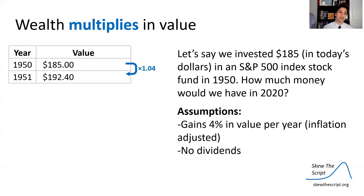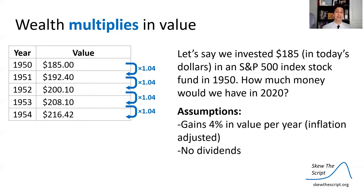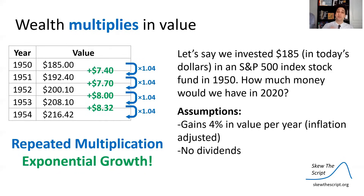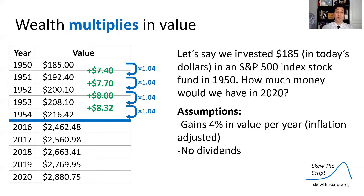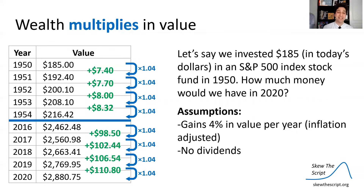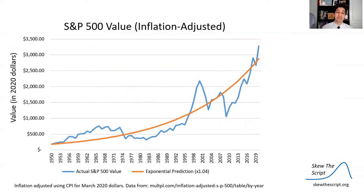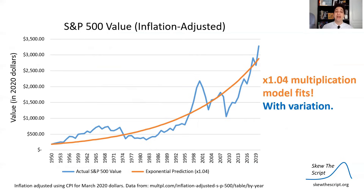Multiplying again by 1.04, by 1954 that's over $200. You see this repeated multiplication producing exponential growth — there's more growth happening over time because you keep multiplying. By 2020, you'd expect to have about $2,880 just from letting your money sit there. The orange line represents this exponential growth — that 1.04 times model — and the blue line is the actual S&P 500 value over time. You can see the model fits it pretty well with some variation. The general trend is this upward multiplying growth.